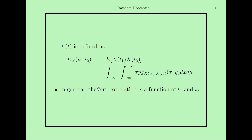In general, the autocorrelation function is a function of t1 and t2 — the two independent times at which we are doing the measurements. But for a wide-sense stationary process, the autocorrelation function will be dependent on the difference between the two times rather than the absolute values of the two times.